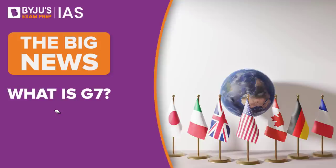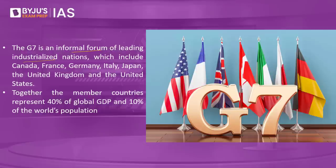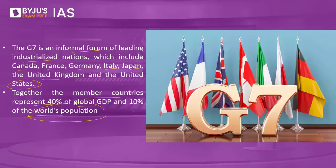Welcome to Baichu's exam prep IAS. The topic for today's discussion is: what is G7? The G7 is an informal forum of leading industrialized nations which include Canada, France, Germany, Italy, Japan, United Kingdom, and the United States of America, where these countries meet on an annual basis to discuss issues facing the global community — including global economic governance, international security, and energy policy. Together, these member countries represent about 40% of the global GDP and 10% of the world population.